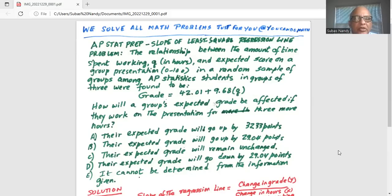Slope of least square regression line problem. The relationship between the amount of time spent working Q in hours and expected score on a group presentation on the scale 0 to 100 in a random sample of groups among AP statistics students in groups of three were found to be grade equals 42.01 plus 9.68 times Q.